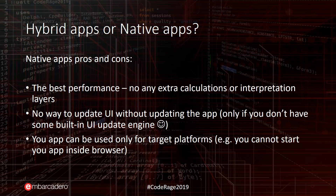What's the difference between native applications and hybrid applications? Native applications have the best performance because they work like low-level machine code. However, they have a limitation: you cannot update your application UI without updating the whole application. And if you have, for example, 1,100 installations, it's not easy to keep all your clients up to date.